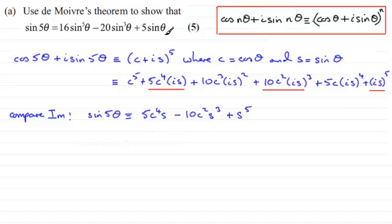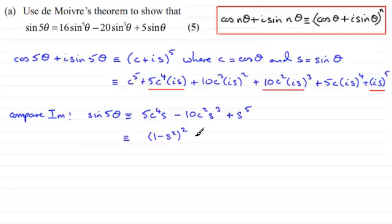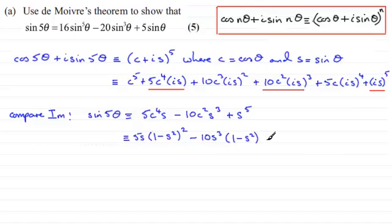We need to express everything in terms of sin θ, so we have to get rid of the cosine terms. cos⁴θ can be written as (cos²θ)², and cos²θ equals 1 − sin²θ, so that's (1 − s²)², multiplied by 5s. For the middle term, cos²θ is 1 − s², giving −10s³(1 − s²). The s⁵ term is already in sine, so we leave it as s⁵.